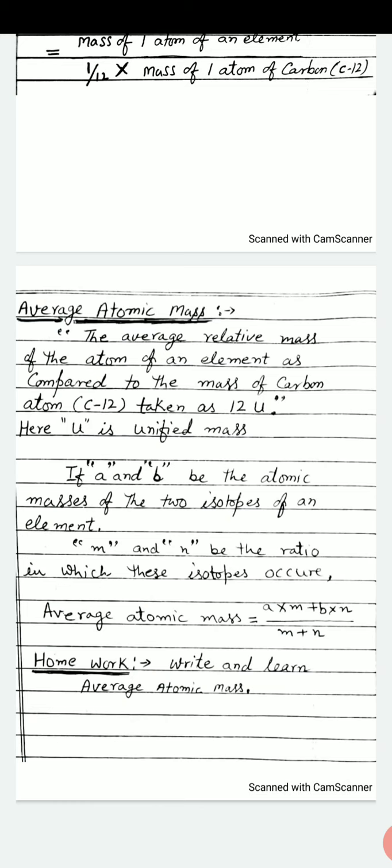Average atomic mass: the average relative mass of the atom of an element is compared to the mass of carbon atom (C-12) taken as 12u, here u is unified mass.